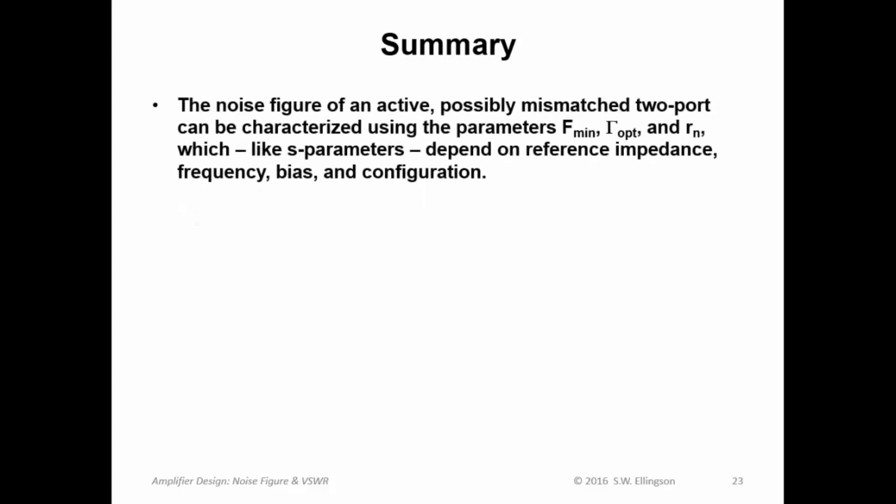So let's summarize what we've talked about in this lecture. First, noise figure of an active, possibly mismatched 2-port, such as a transistor and an amplifier design, can be characterized using the parameters F sub min, gamma sub opt, and the normalized noise resistance, which, just like the S parameters,